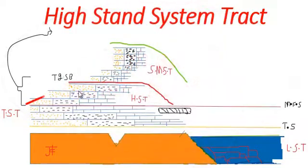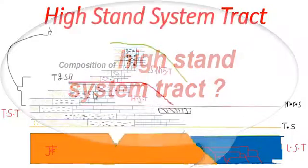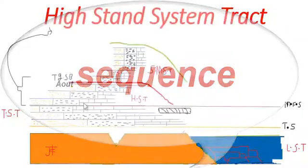High stand system tract forms during progradation during seaward migration of terrestrial facies. It contains top sets and clinoforms.